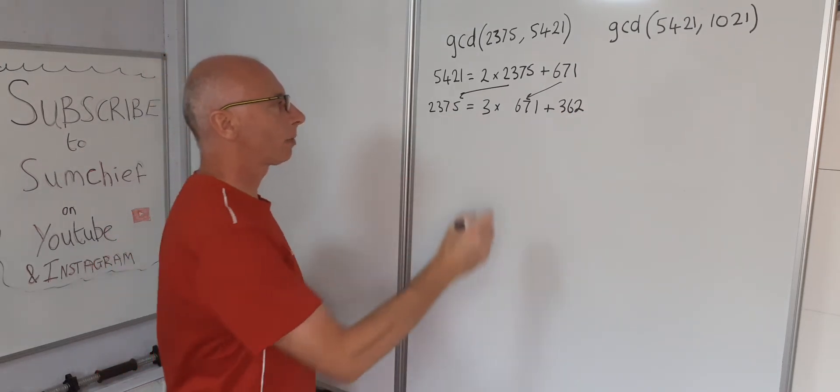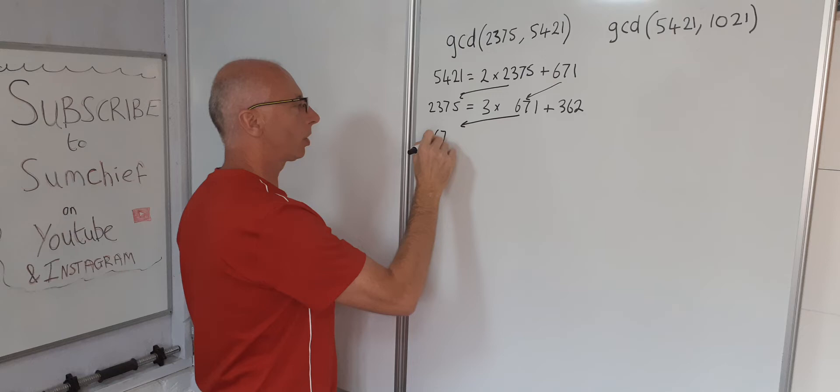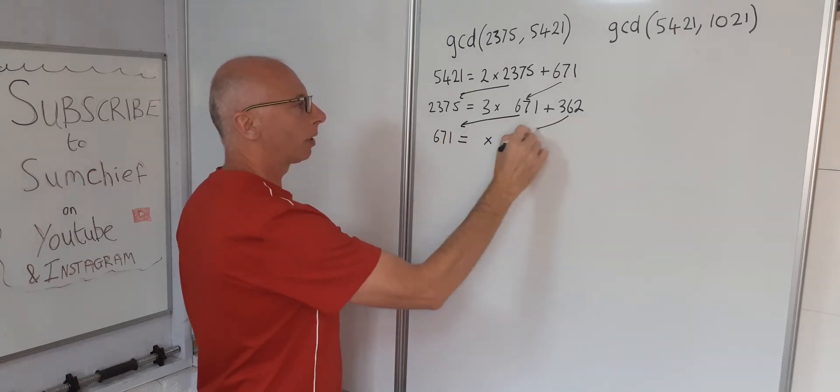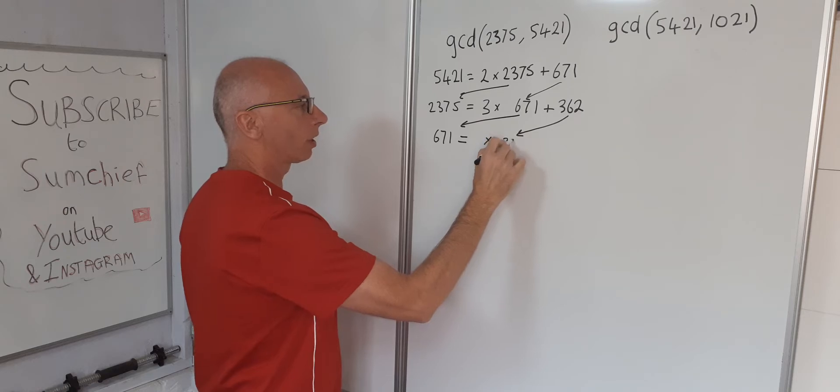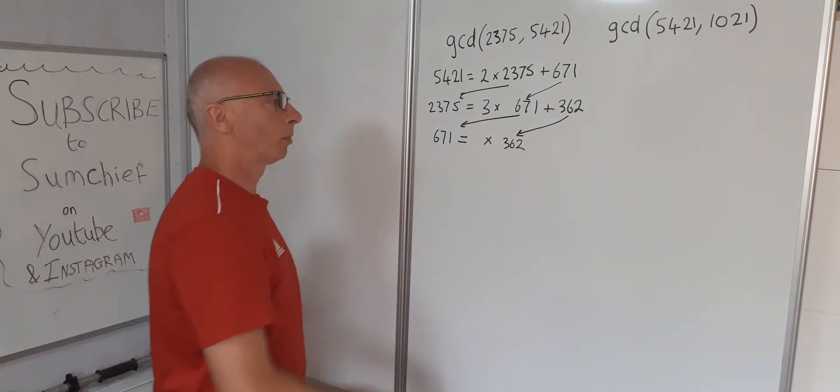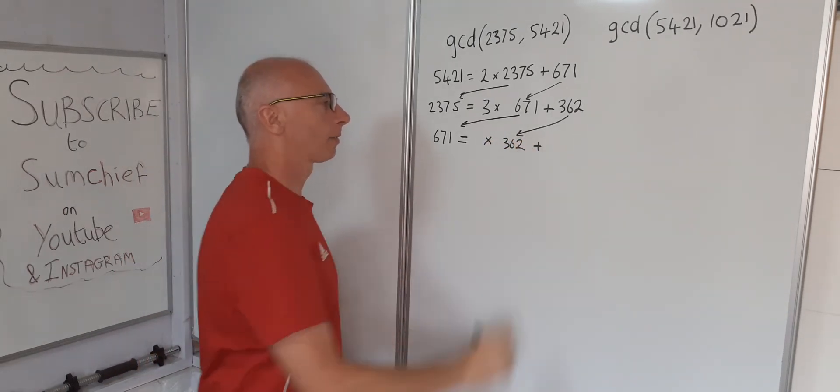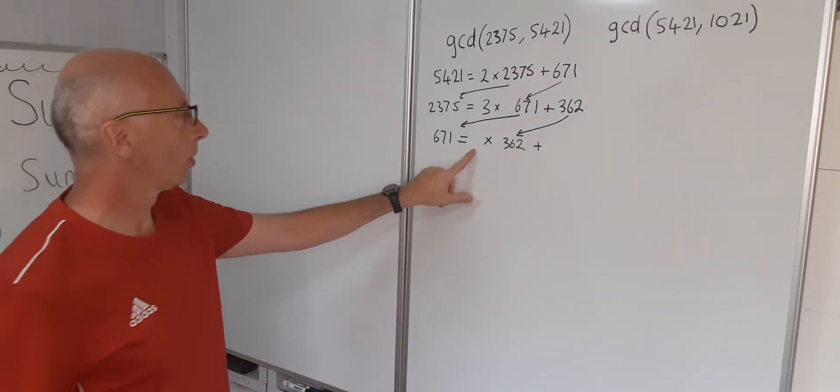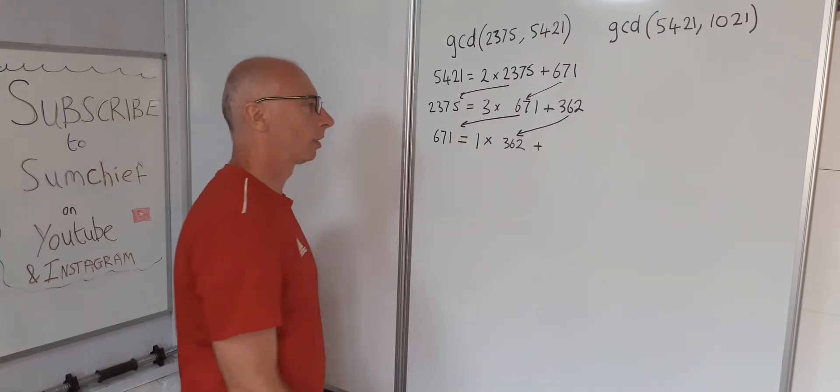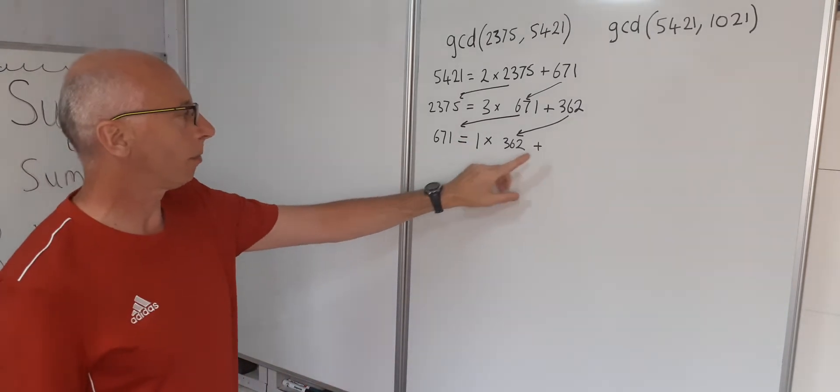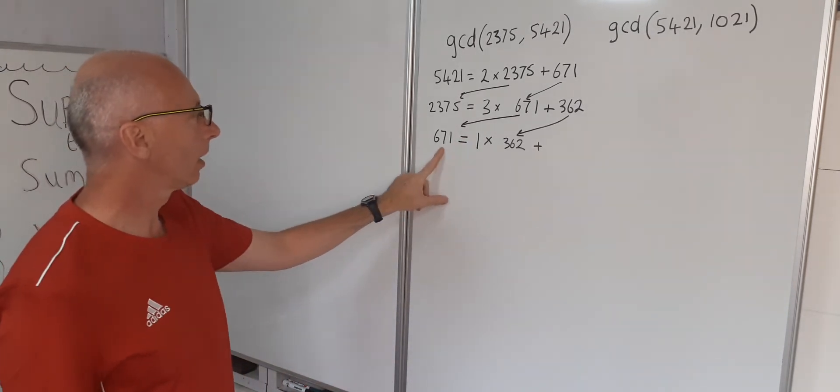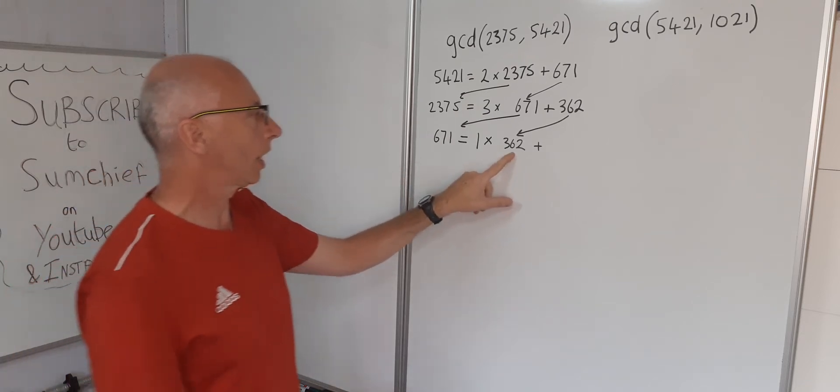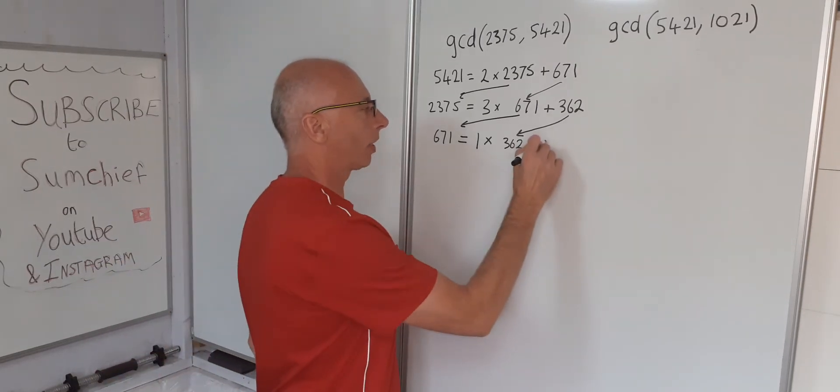Same system again, this time we make 671 the subject and that's going to be multiplied by 362 and something multiplied and then add. Well 362 times 2 is 724 so we know this is going to be 1. So all we have to do now to find the remainder, subtract again so 400 will give us 271 plus 38. 271 plus 38 is 309.